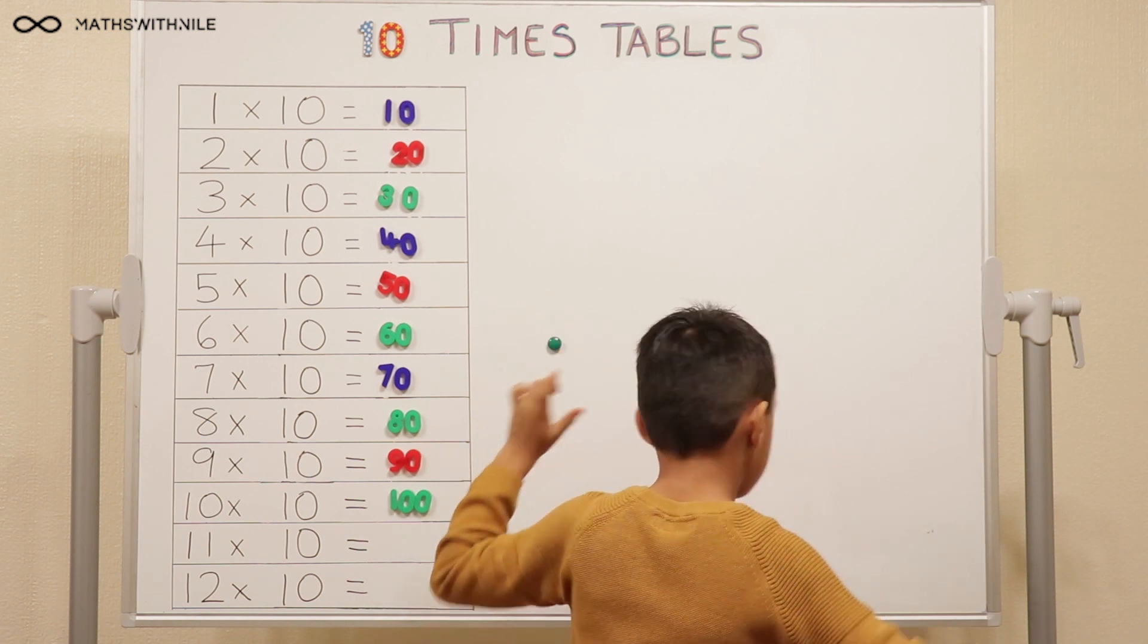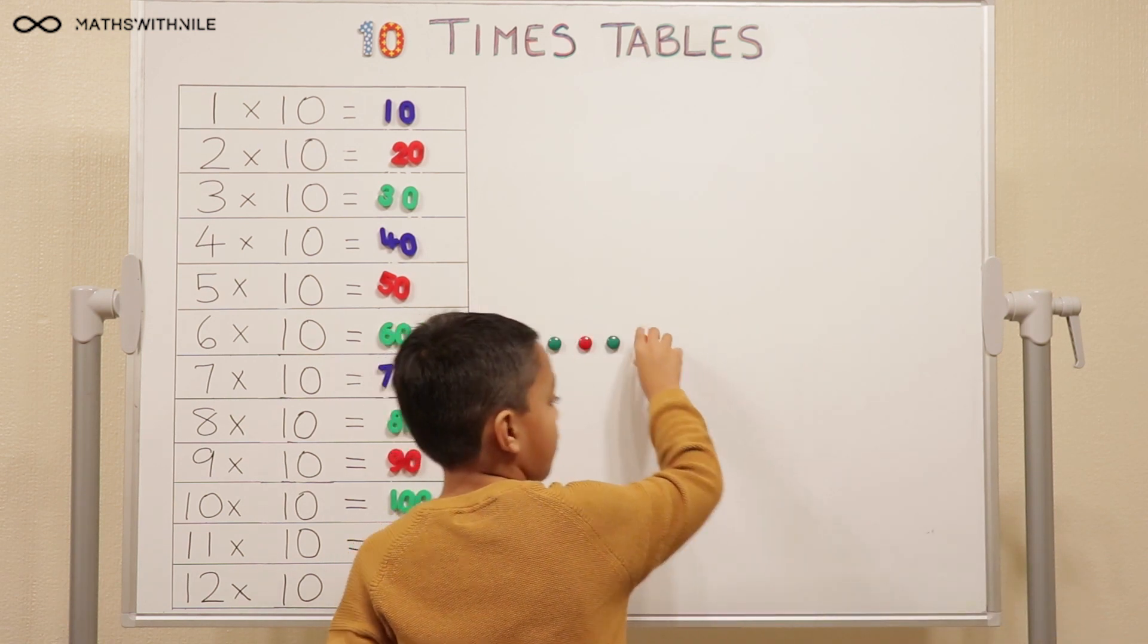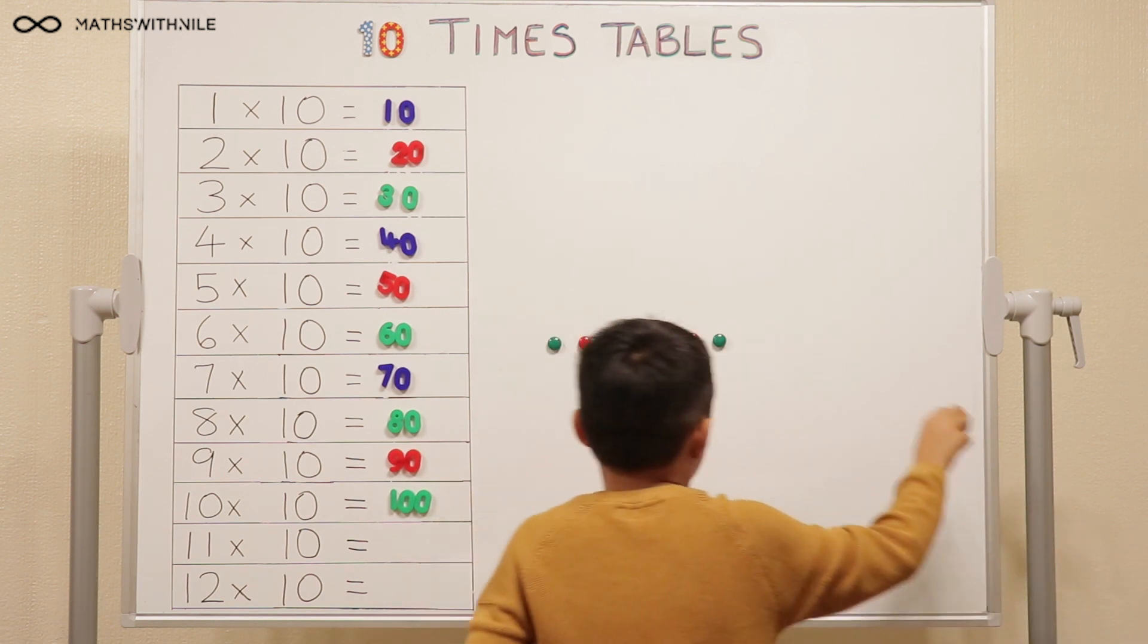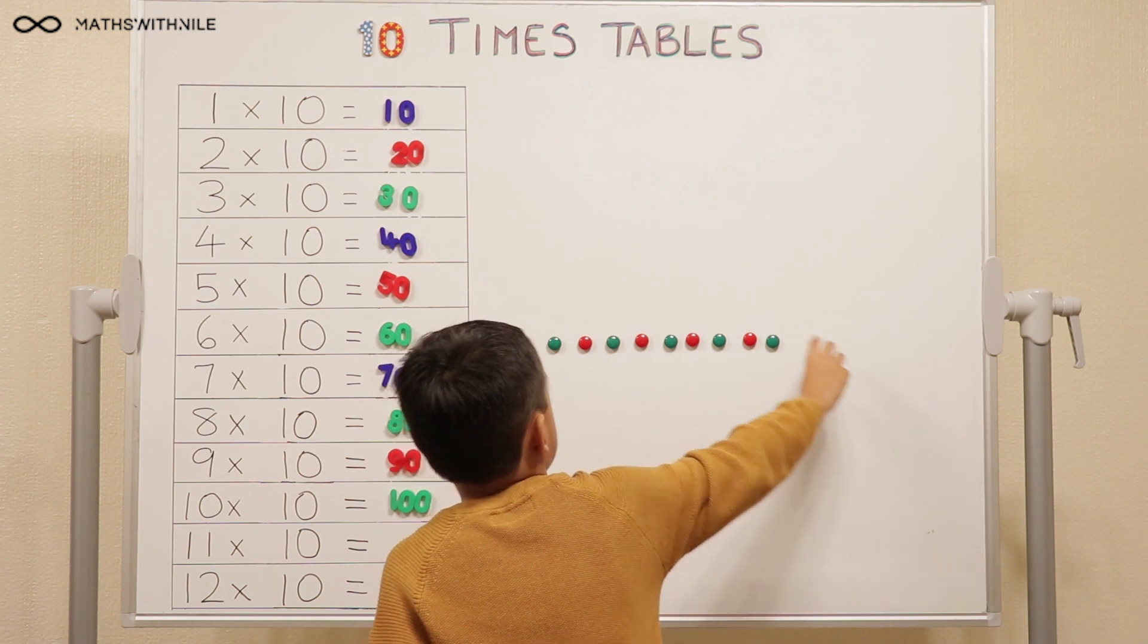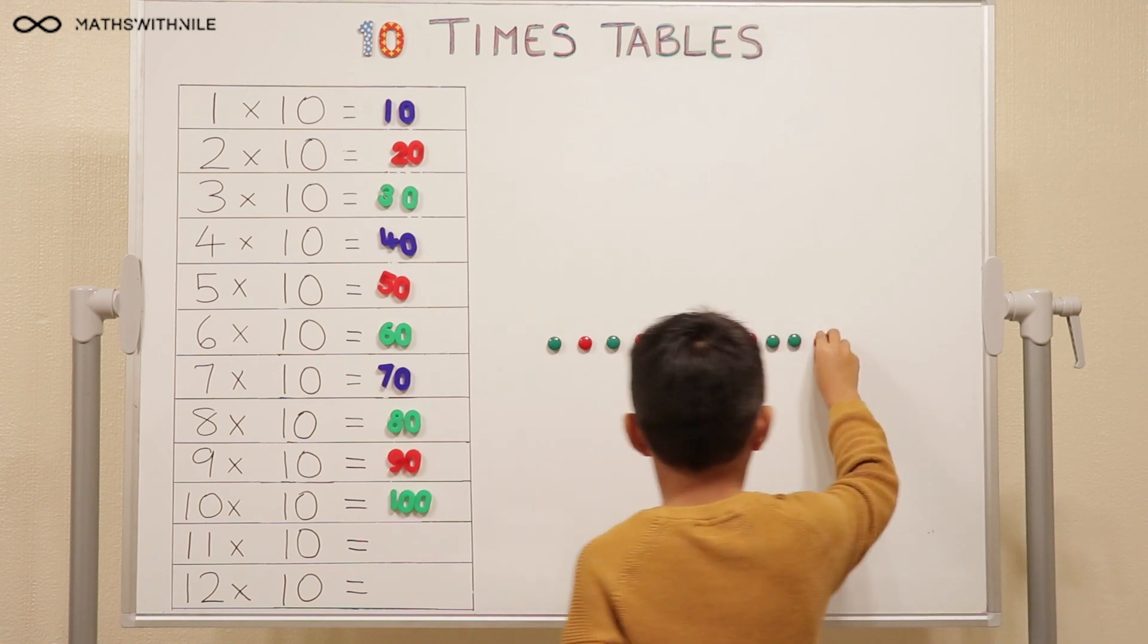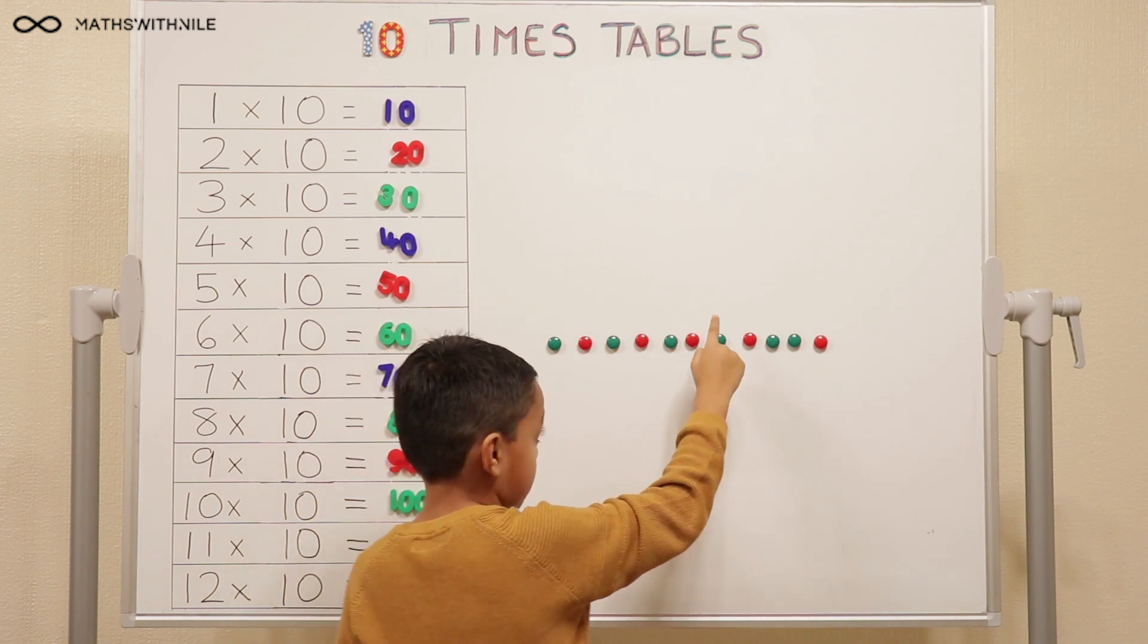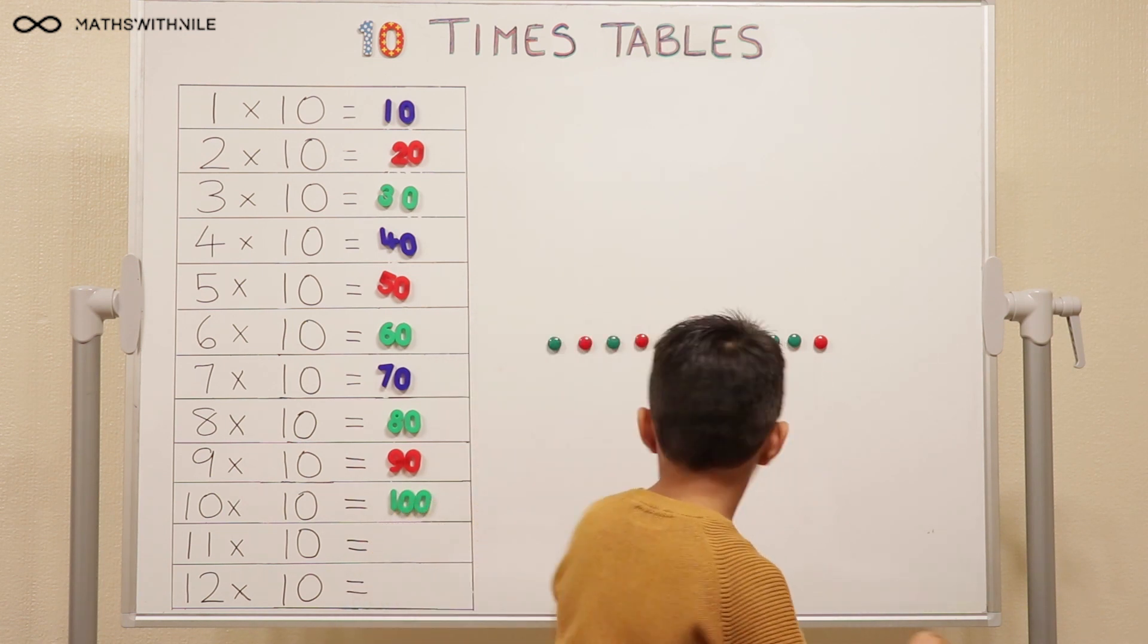So what would the value be of each counter? 10. Okay, go ahead. So put your 11 counters down. 1, 2, 3, 4, 5, 6, 7, 8, 9, 10, 11. Good. So you've got 11 counters and the value of each one is 10. Yeah. So I'll count them in 10s this time. 10, 20, 30, 40, 50, 60, 70, 80, 90, 100, and 110. Very good. So 110. 1, 1, 10.